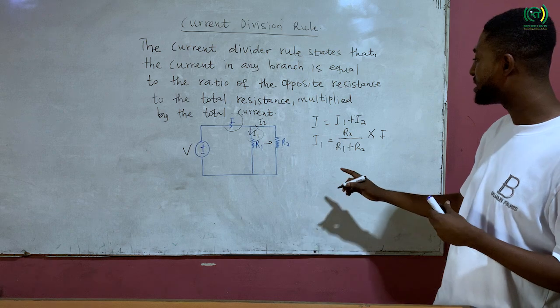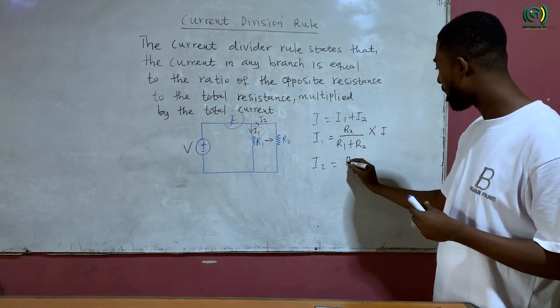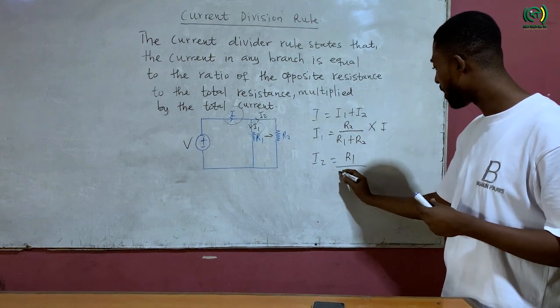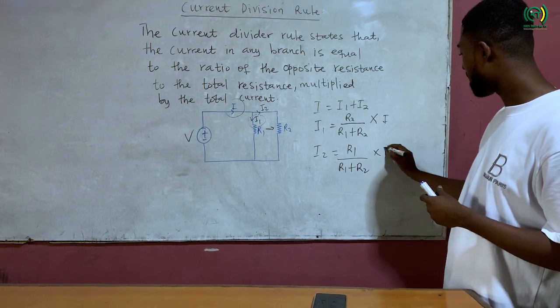So if I want to calculate the current I2, I2 equals R1 over R1 plus R2 times I.